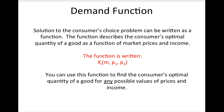For each of these choice environments, we can write the solution to the consumer's choice problem as a function. This function describes the consumer's optimal quantity of a good as a function of market prices and income. This function is called the demand function, written as Xi as a function of income, the price of good 1, and the price of good 2. You can use this function to find the consumer's optimal quantity for any possible values of prices and income, and to analyze how choices change as market conditions change. This type of analysis is called comparative statics.